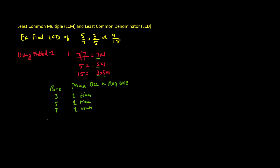Therefore the LCD would be 3 multiplied once, multiplied by 5 multiplied once, and multiplied by 7 once. So you multiply all three together and you get the LCD, which is 105.